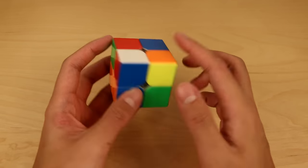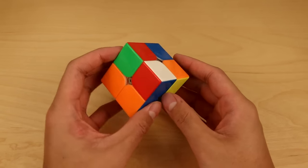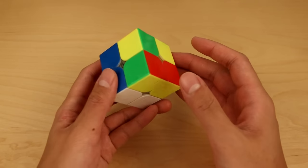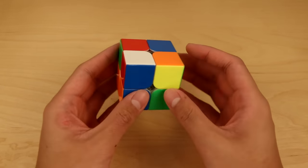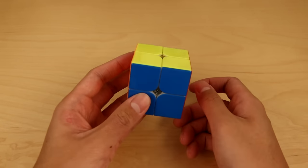Now what I could do is solve the last layer like normal, like a CLL. The hard part about this method is that recognition is a bit more difficult. However, if you are able to recognize it, the solution of this case is super simple. You just do a Sune here, and then R2 to finish off the solve.